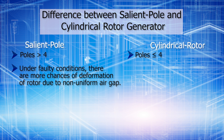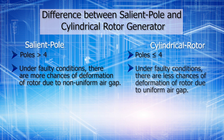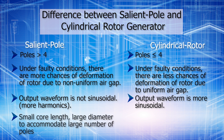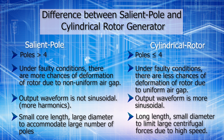In salient pole, the output waveform is not sinusoidal — there are more harmonics and the shape is distorted. In cylindrical rotor, the output waveform is more or less sinusoidal. In salient pole, we have small core length and large diameter to accommodate a large number of poles, whereas in cylindrical rotor we have long length and small diameter to limit large centrifugal forces due to high speed.